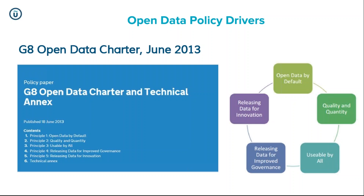To give a very quick context of open data, the G8 countries — the UK and others — signed an open data charter in June 2013, which was around five key principles of open data. All public sector organisations should be doing principle one: open data by default. All processes, governance, etc. should be managed in a way that ensures that is the default position — publishing your data as a public asset.